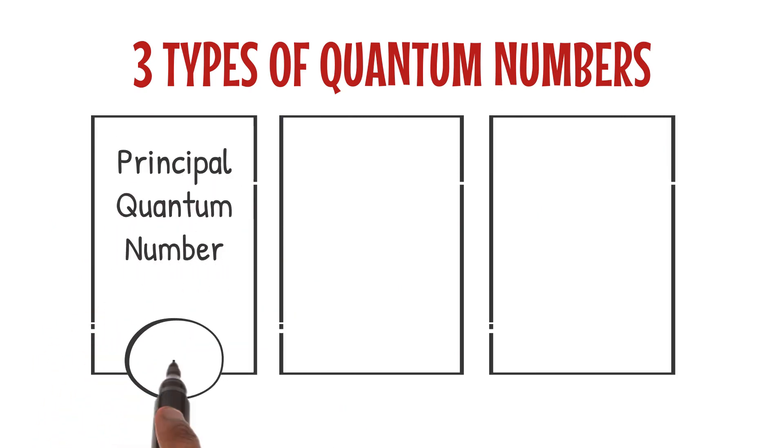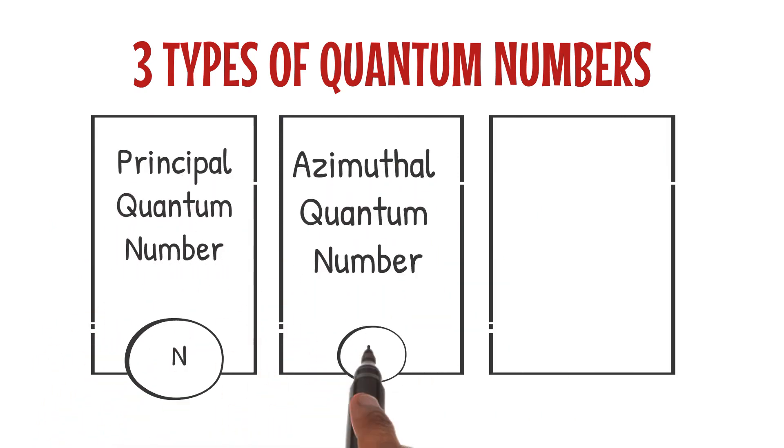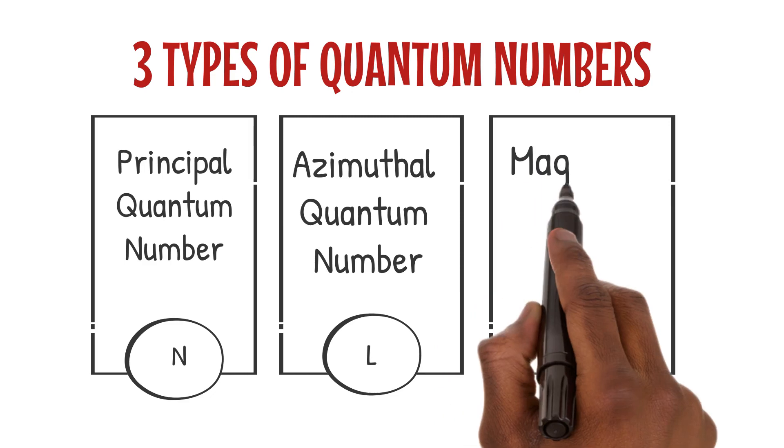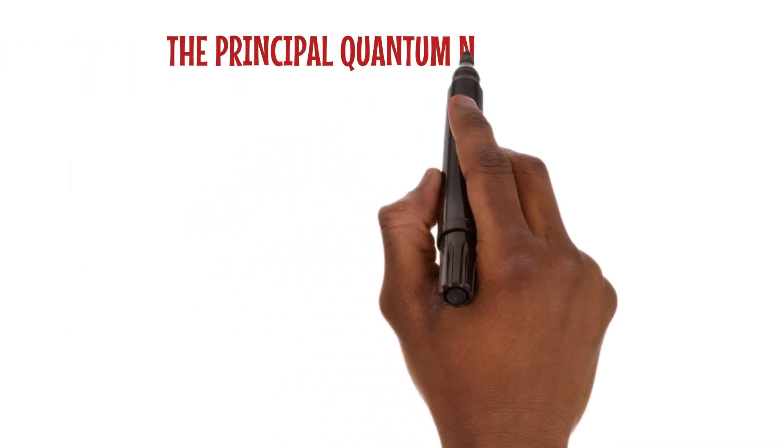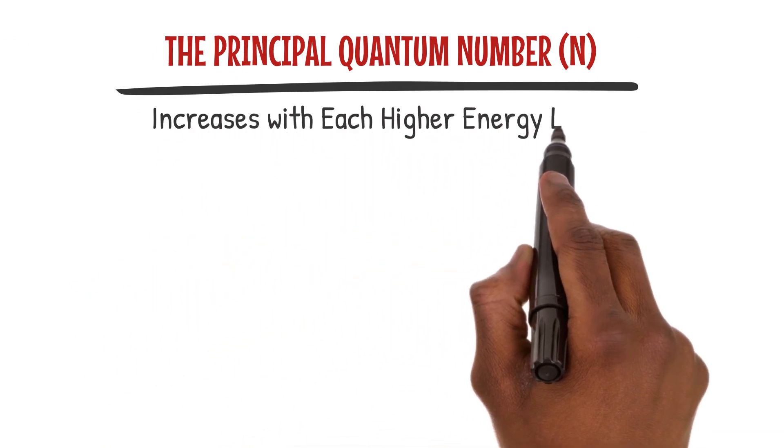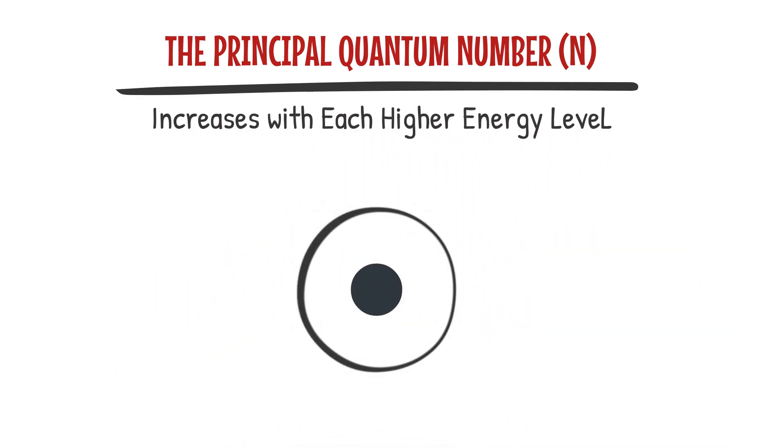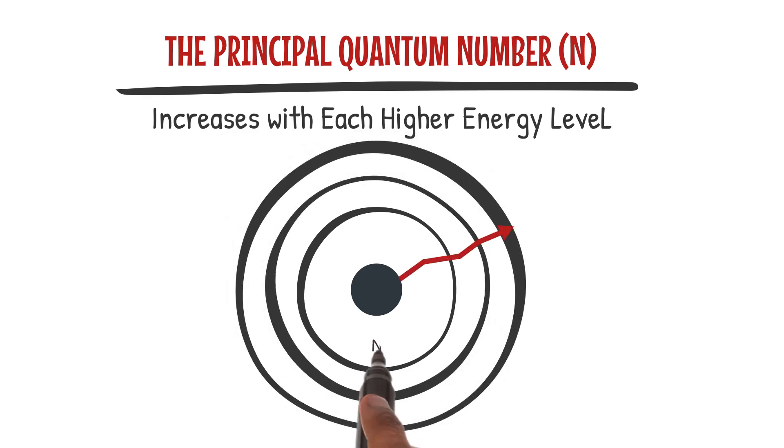We have three types of quantum numbers: the principal quantum number n, the azimuthal quantum number l, and the magnetic quantum number ml. The principal quantum number n determines the energy level or principal shell of the electron. It increases with each higher energy level, and it also determines the electron's average distance from the nucleus.